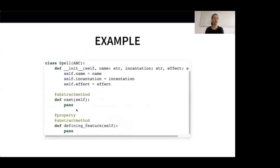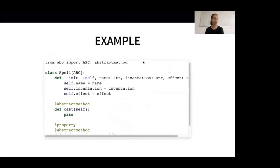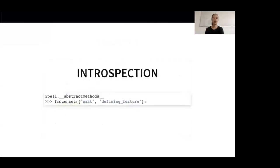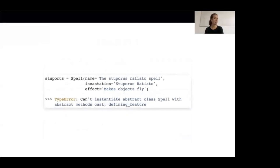We can introspect an ABC to find out what abstract methods it requires using the __abstractmethods__ property. Let's test whether we can instantiate the base class Spell using a simple spell, StuporusRaciato. We call our Spell class with a name, an incantation, and an effect — but this doesn't work, which is exactly what we want, since for abstract base classes it should not be possible to instantiate the base class. So this is what we expected and what we want.